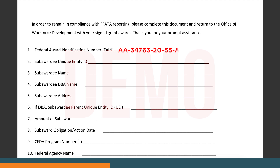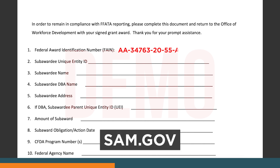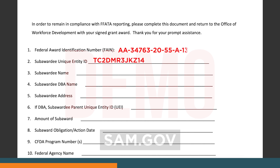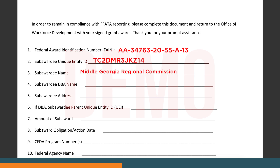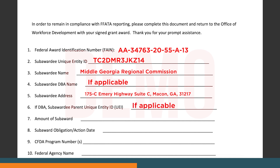Two, subawardee unique entity ID — visit SAM.gov to look up your subawardee unique entity ID. Three, subawardee name. Four, subawardee DBA name. Five, subawardee address. Six, if DBA, subawardee parent unique entity ID (UEI). Seven, amount of subaward.